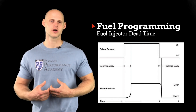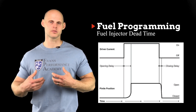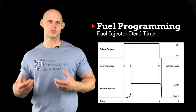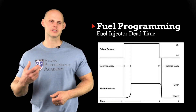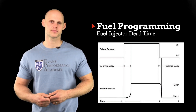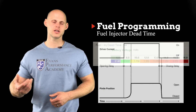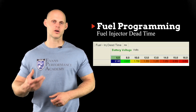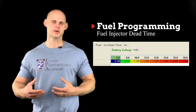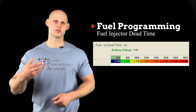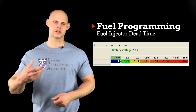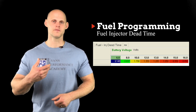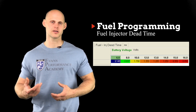To get our corrected pulse width — our total effective pulse width — we need to characterize this lag time. In this table here, we're going to program our injector latency, offset, or dead time, depending on what you want to call it. We're going to populate this table with values based on the different voltages we operate our injector at.